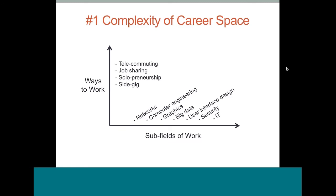These two dimensions together — the vast number of career choices and the many ways to work — create a really large space that can be overwhelming to navigate. Industries and fields are also changing faster than ever before due to globalization and technology, making the future much less predictable when making a career decision. For instance, when thinking about whether to go back to school, it's a tougher call because industry demands can change while you're in school and new skills might become obsolete in a few years.